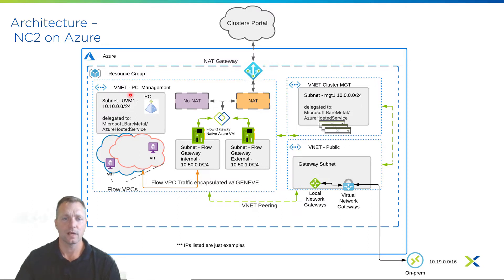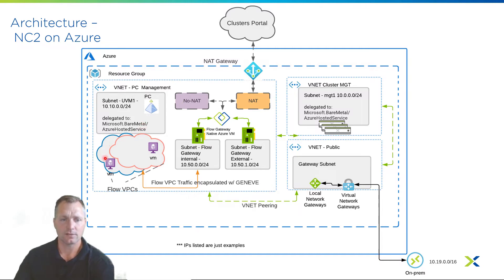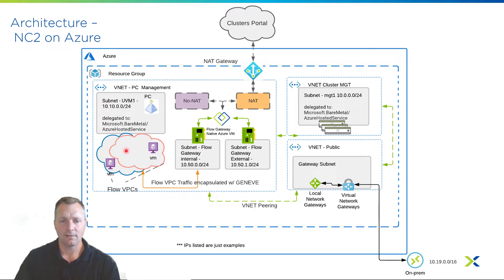Once Prism Central is up and running, we will start deploying our microservices platform, which is where we're going to set up and run our overlay networking. The overlay networking allows us to deploy multiple Nutanix VPCs for our users. These networks for guest traffic will have north and southbound connectivity through this Flow Gateway VM. This Flow Gateway VM is a native Azure resource. It's also highly available — if it goes down, we will deploy another Flow Gateway VM.